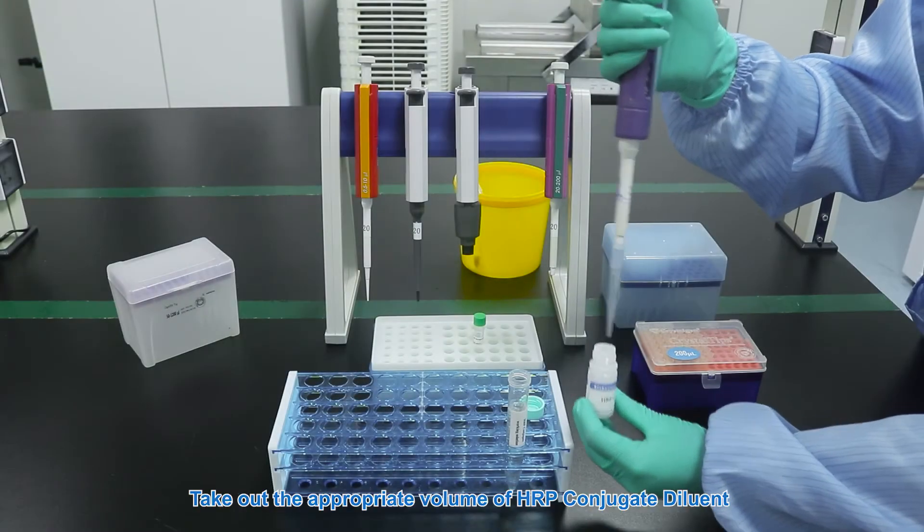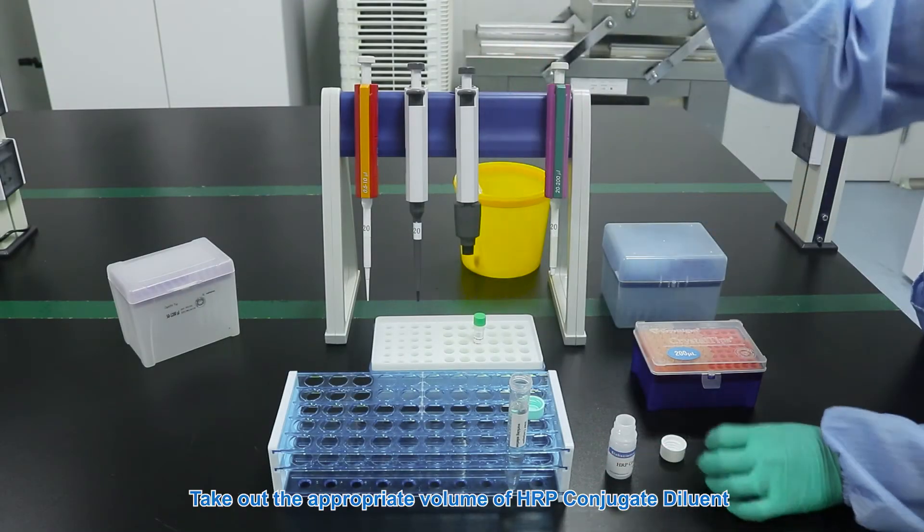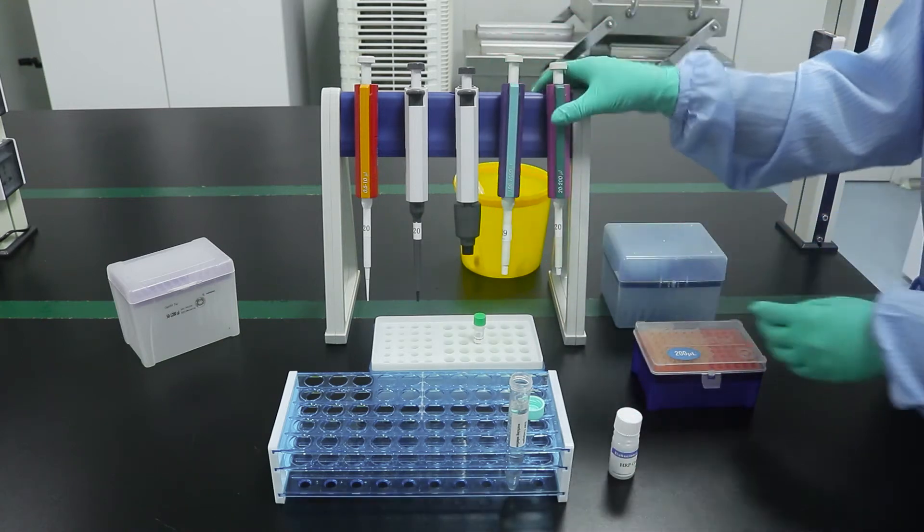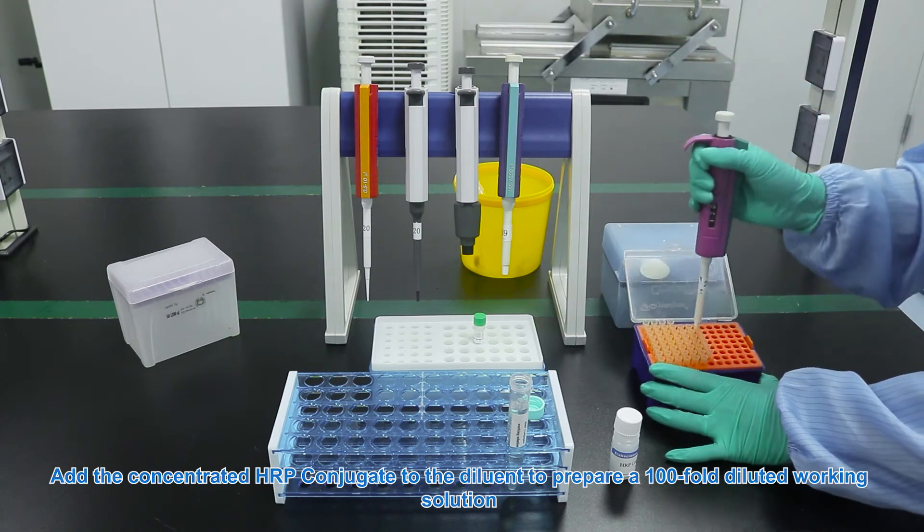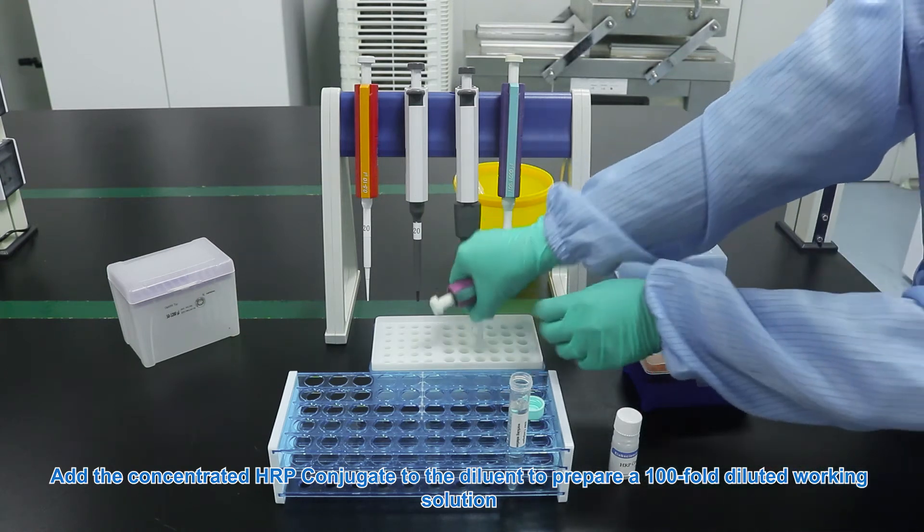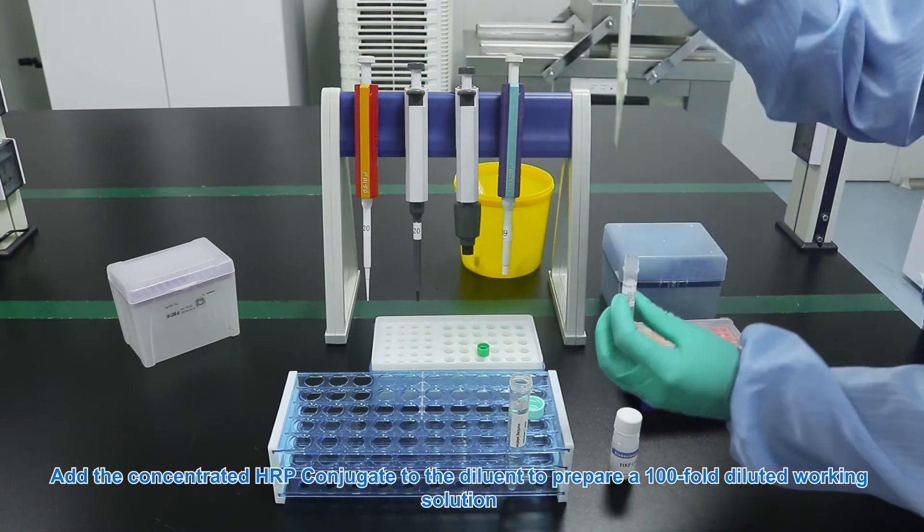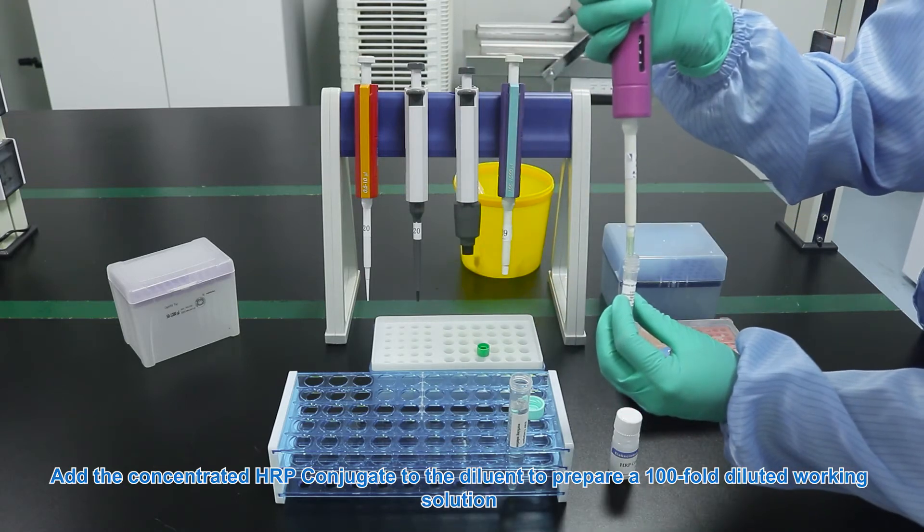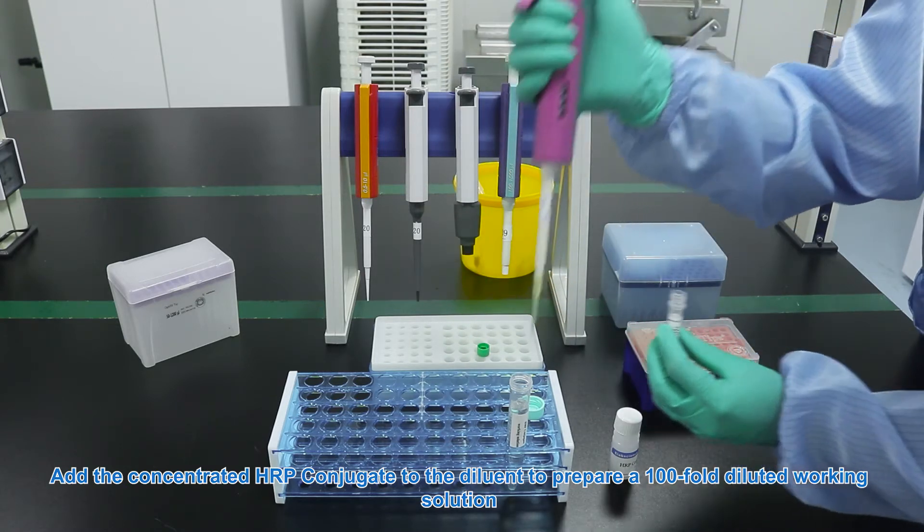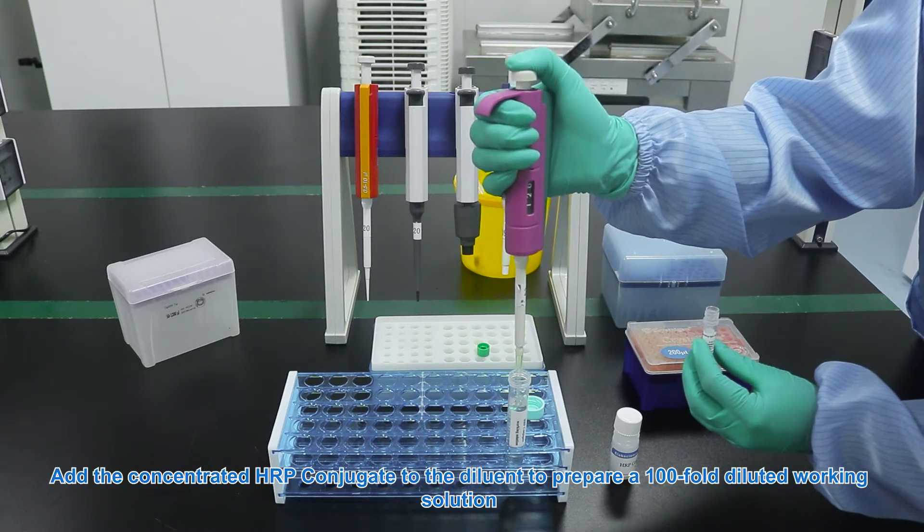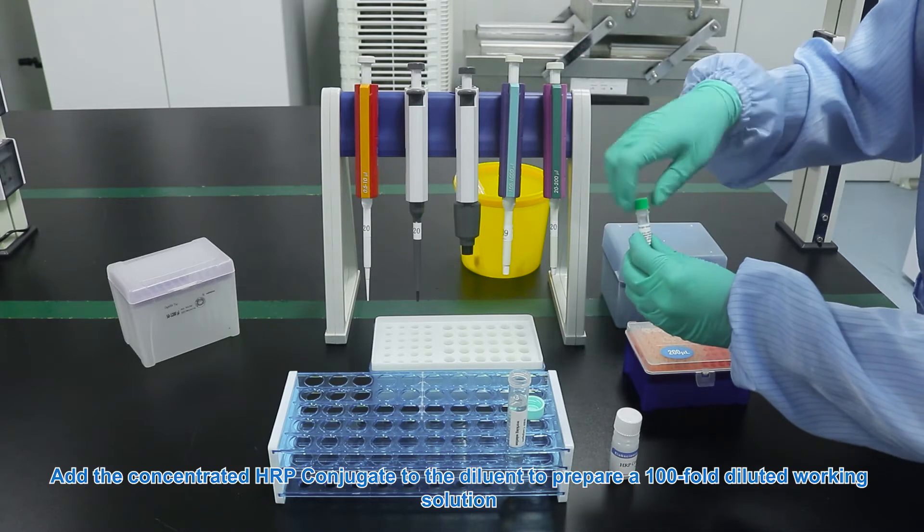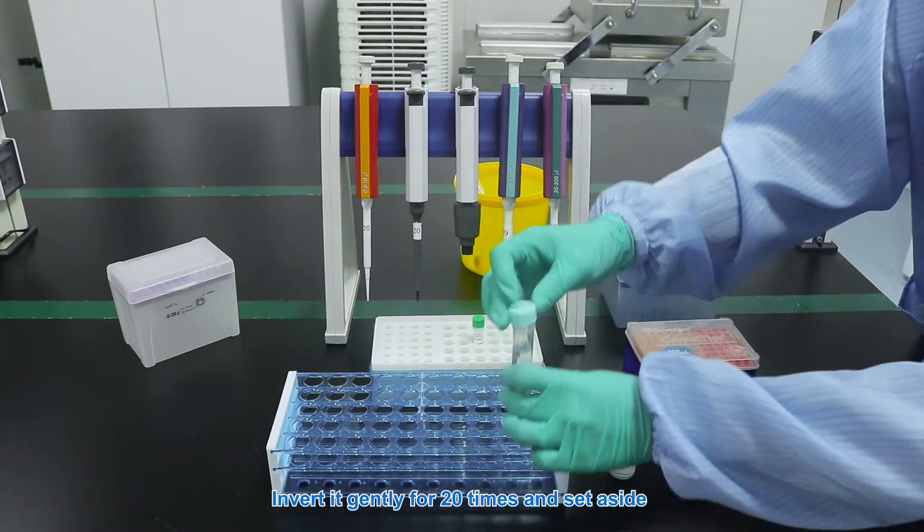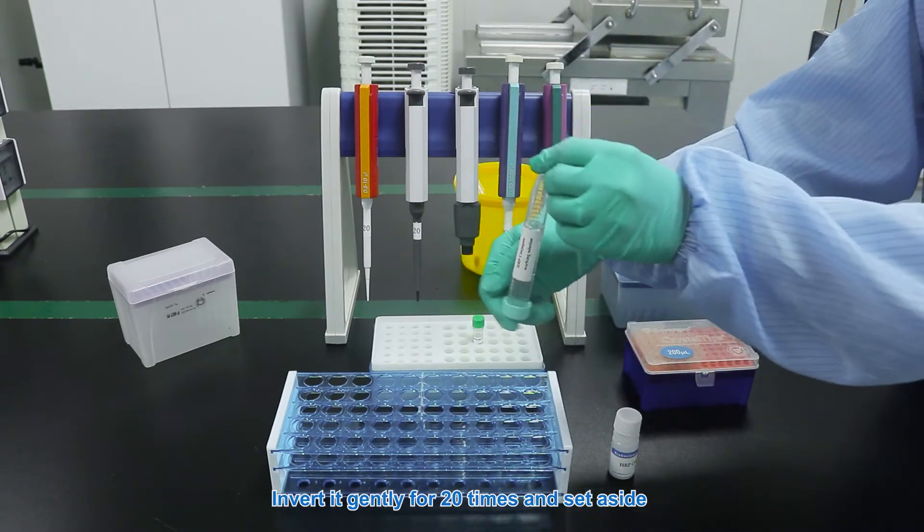Take out the appropriate volume of HRP conjugate diluent. Add the concentrated HRP conjugate to the diluent to prepare a 100-fold diluted working solution. Invert it gently for 20 times and set aside.